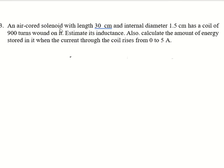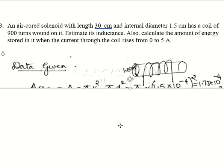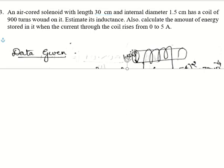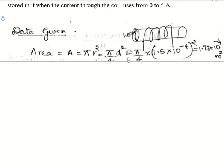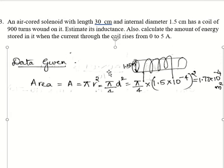Next question: an air-core solenoid with length 30 centimeter and internal diameter 1.5 centimeter has a coil of 900 turns wound on it. Estimate its inductance and calculate the amount of energy stored when the current through the coil rises from 0 to 5 ampere. This is an air-core solenoid — a core with a large number of turns. Use the equation L = Nφ/I as the starting point.